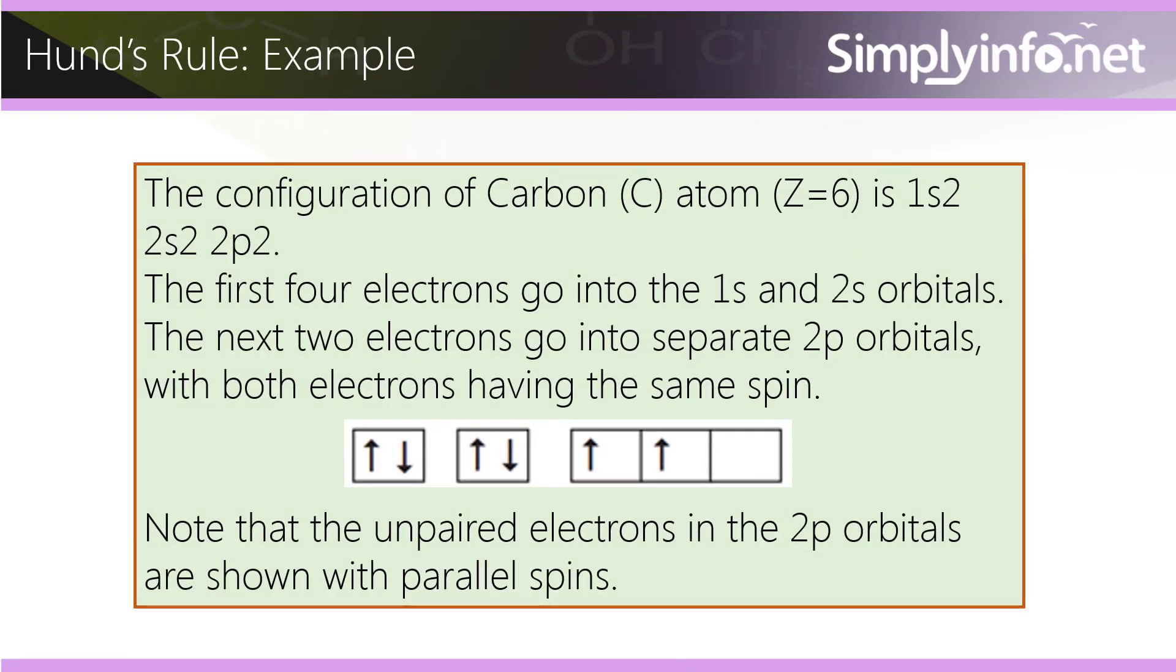Hund's Rule example. The configuration of carbon atom (Z = 6) is 1s² 2s² 2p². The first four electrons go into the 1s and 2s orbitals. The next two electrons go into separate 2p orbitals, with both electrons having the same spin. Note that the unpaired electrons in the 2p orbitals are shown with parallel spins.